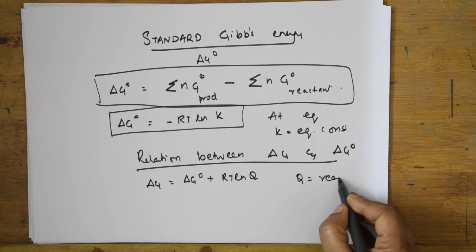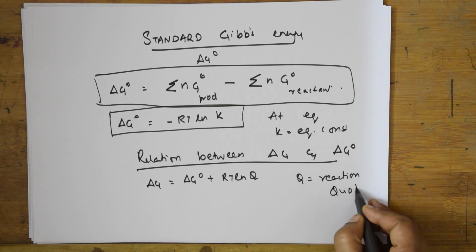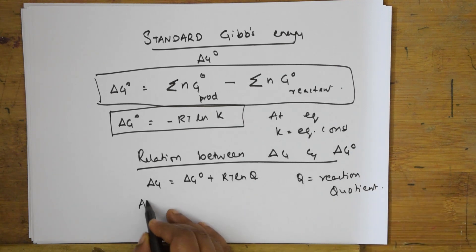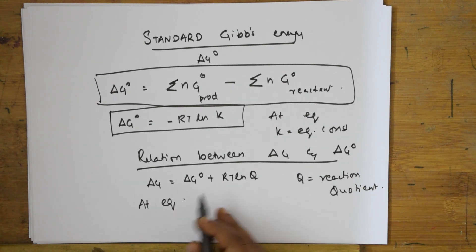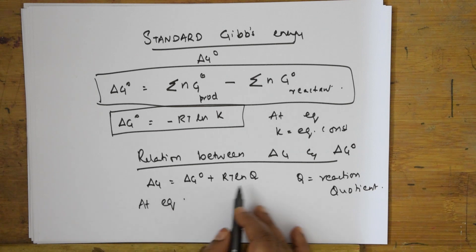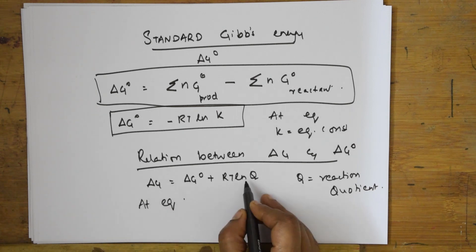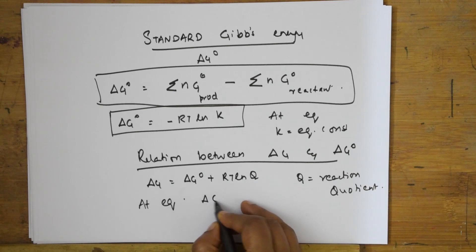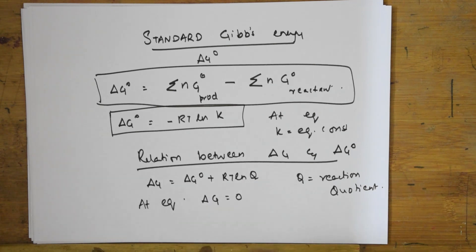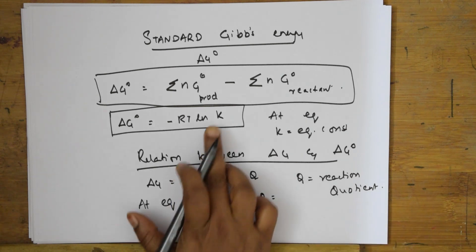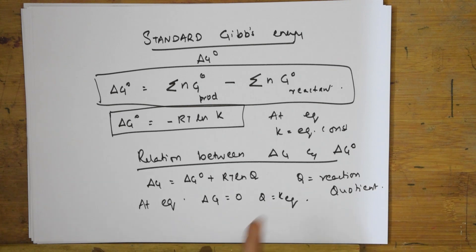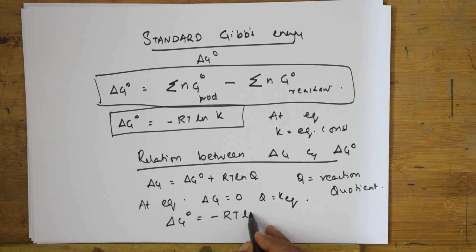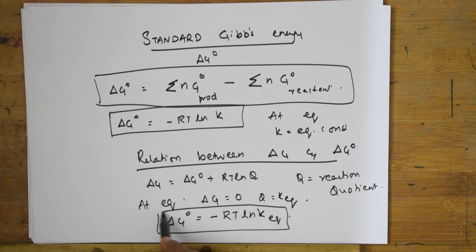At equilibrium, ΔG becomes zero and Q equals K_equilibrium. Substituting these values: 0 = ΔG° + RT ln K, which gives ΔG° = -RT ln K_equilibrium. This is the key relation between ΔG and ΔG°.